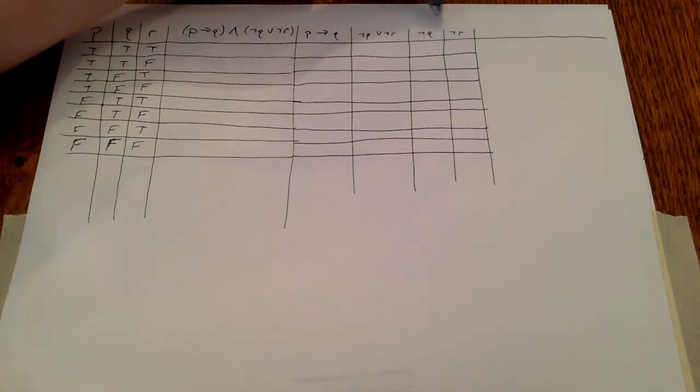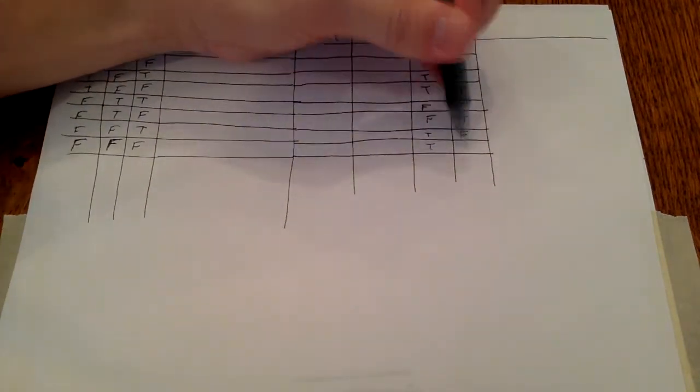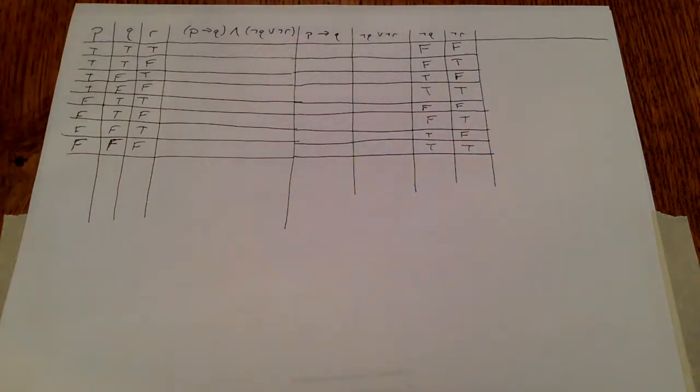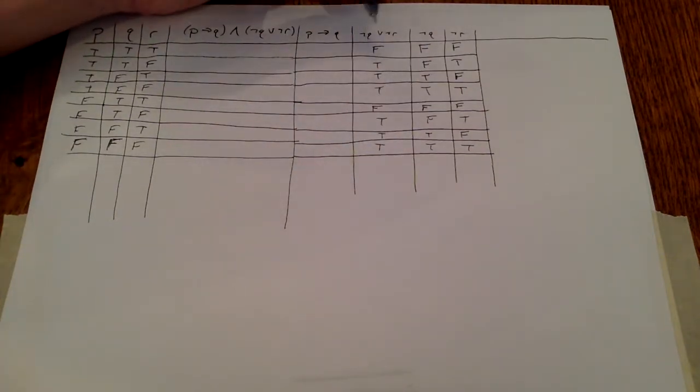So let's go and fill in these not operations by looking and flipping what we see in the Q and the R. Now we just need to combine these two columns via the or operation to build this, which is very simple. And there we are, we have our column with the complete values.